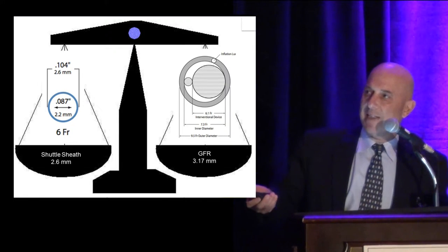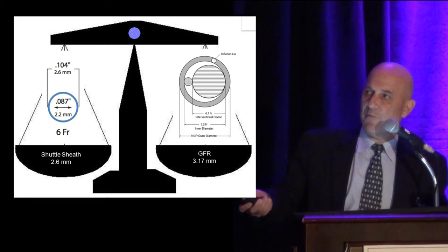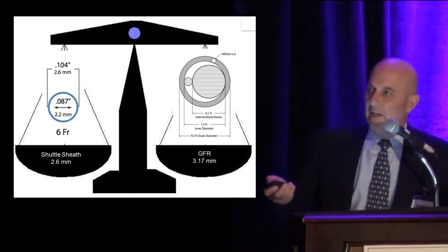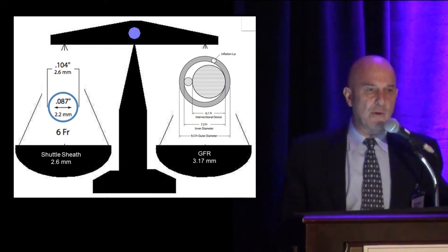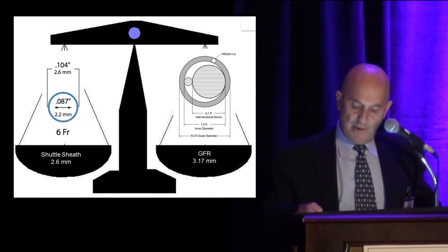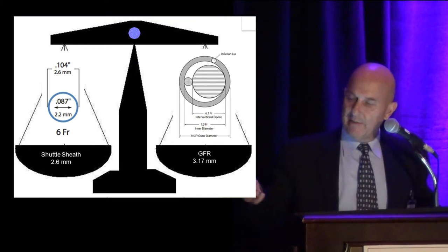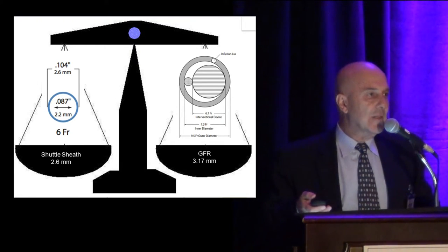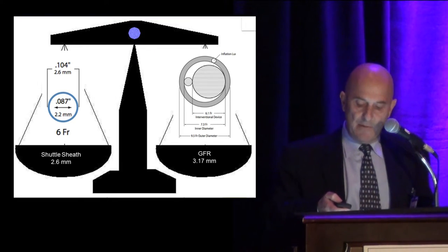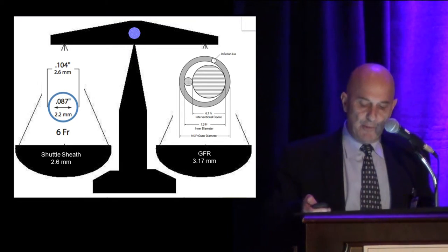In terms of sheath size: a 6 French makes a hole of 2.6 millimeters in the artery, while the Gore flow reversal system made a hole of 3.17 millimeters. Some feel it's acceptable to go larger in exchange for superior cerebral protection.